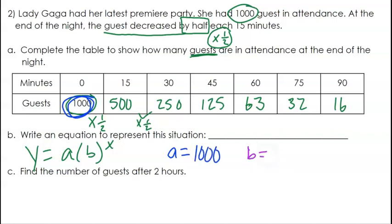And then b is that common ratio or the number we're multiplying by each time. So we multiply by 1 half. So we're going to put 1 half there. Now we can put that together in our equation. y equals a, which is 1,000, times b, which is 1 half, raised to the power of x.